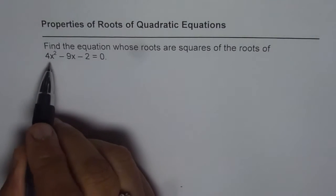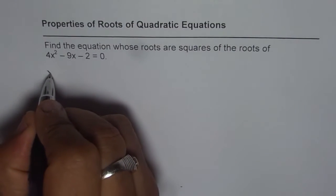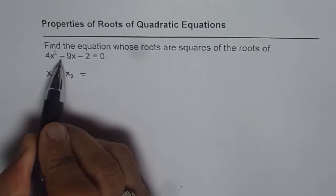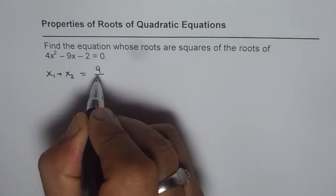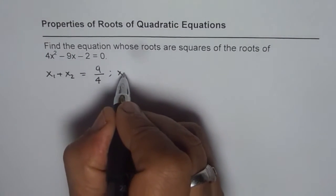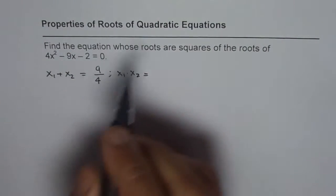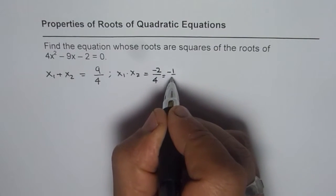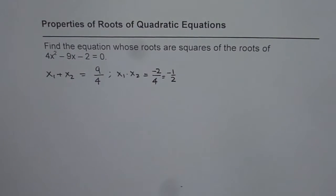Let us say x₁ and x₂ are roots for this particular quadratic equation. In that case, what is going to be the sum of roots? x₁ + x₂ will be -b/a, so that would be 9/4. And how about the product? x₁ × x₂ will be c/a which is -2/4 or minus half. So these are the sum and product of the given roots.